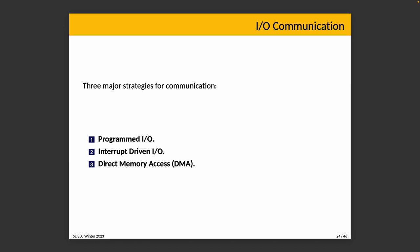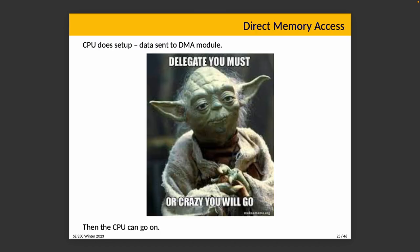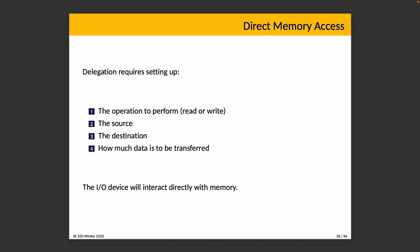What if we could eliminate the middleman — the CPU — from this equation? That's the third option: DMA, direct memory access, the most efficient way to handle a large block of data. The CPU delegates: it does some setup, sending data to the DMA module saying 'you figure it out,' and can go on with its life. The CPU may have to contend with the DMA operation to get the bus, but it's still more efficient than polling or interrupts. Delegation specifies the operation — read or write, source, destination, and how much data is transferred — and the IO device can interact directly with memory without having to involve the CPU more than once.